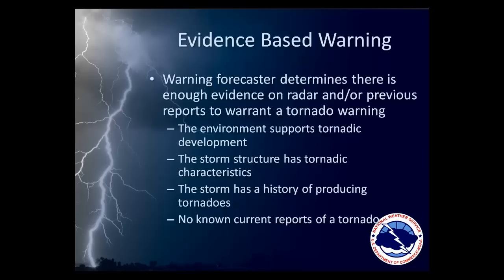If the storm structure has tornadic characteristics — again, as explained in Section 1 — we know the type of storm we are looking at based on radar and its potential to produce severe weather. Finally, we look to see if the storm has a history of producing tornadoes and if there are any current reports of a tornado.